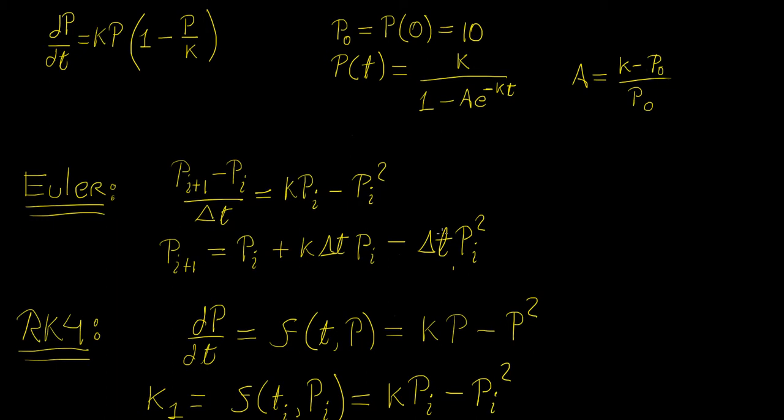For the Euler method, we know that it's pretty straightforward. All we need to do is replace the first derivative by some kind of first order or first finite difference approximation like the forward finite difference approximation, and then all we need to do is solve for the value P_i+1. This is the update equation that we're going to put inside of a loop.